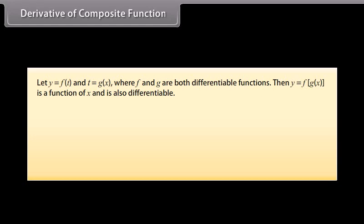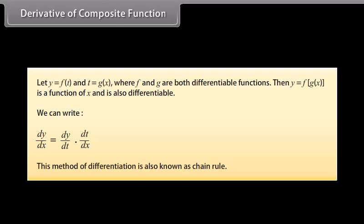Derivative of composite function: Let y = f(t) and t = g(x), where f and g are both differentiable functions. Then y = f(g(x)) is a function of x and is also differentiable. We can write d/dx(y) = d/dt(y) · d/dx(t). This method of differentiation is also known as the chain rule.